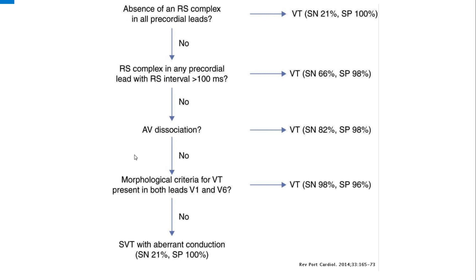The third step is AV dissociation. We look for the presence of P waves and QRS complexes. In the case of AV dissociation and ventricular tachycardia, there will be fewer P waves compared to QRS complexes, with no association between them. If AV dissociation is present, this is ventricular tachycardia. Otherwise, we move on to the morphological criteria, looking at the morphology of the QRS complex in leads V1 and V6. If the morphology meets the criteria for VT, it is ventricular tachycardia; otherwise it is SVT with aberrant conduction.